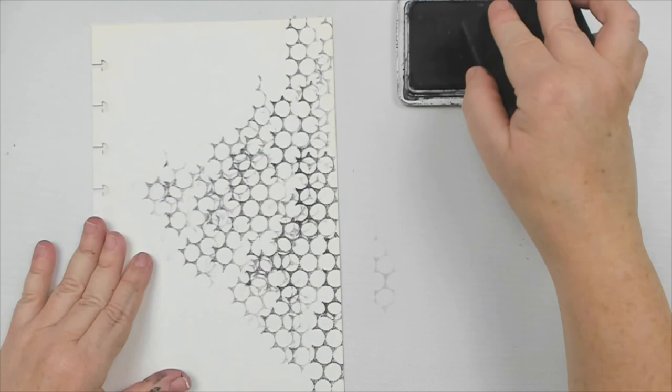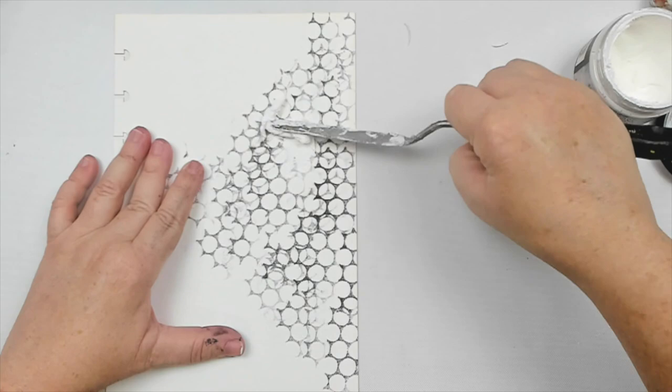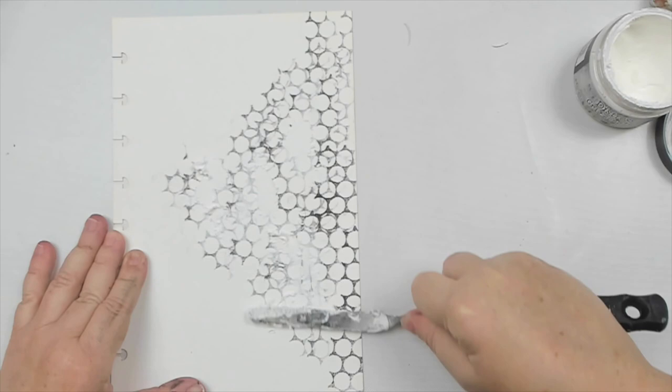To create even more distress to the background, I took some white texture paste, which is the Tim Holtz grit paste, and using a palette knife, I added it in certain areas very roughly to cover some of the design that I had created.